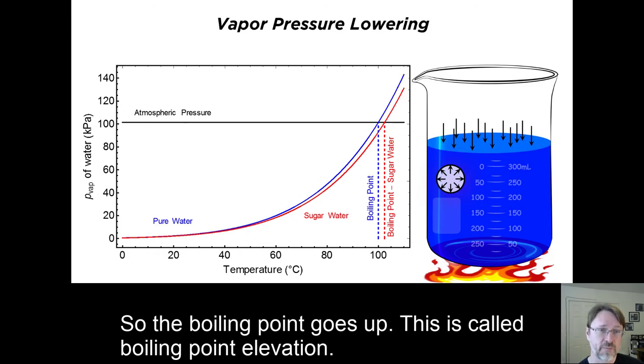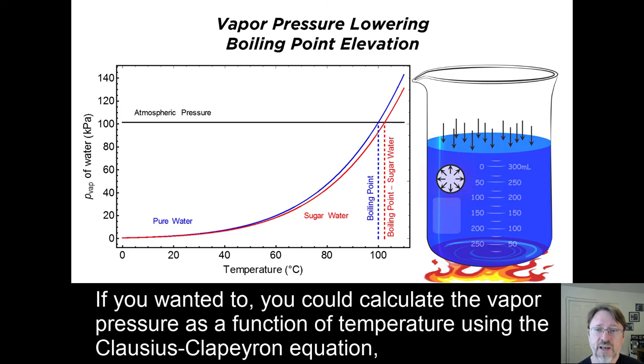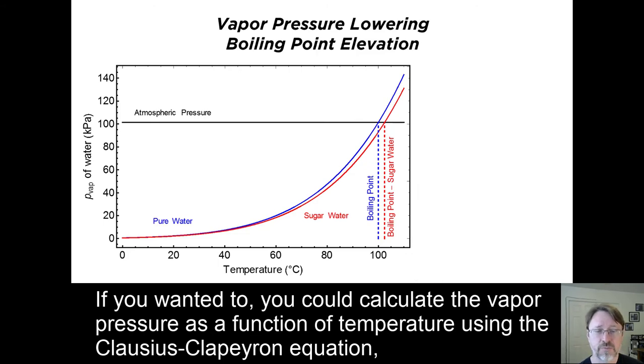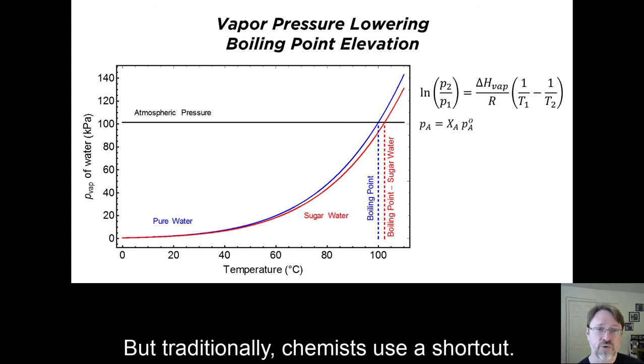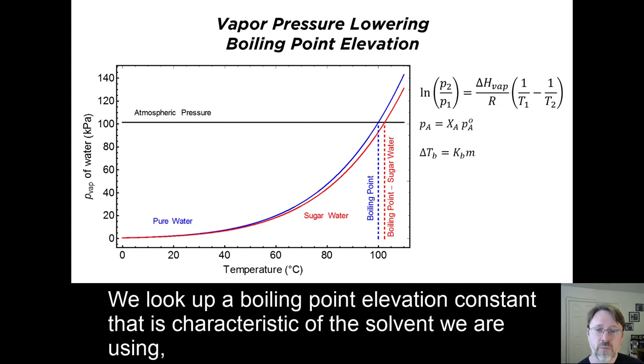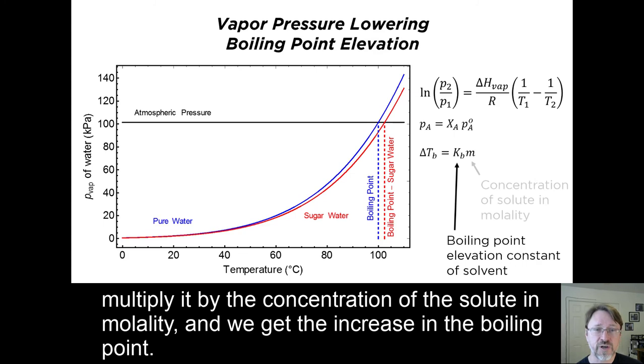If you wanted to, you could calculate the vapor pressure as a function of temperature using the Clausius-Clapeyron equation, and then use those results in Raoult's law to find the new boiling point, which is what I did in these graphs. But traditionally, chemists use a shortcut. We look up a boiling point elevation constant that is characteristic of the solvent we are using, multiply it by the concentration of the solute in molality, and we get the increase in the boiling point.